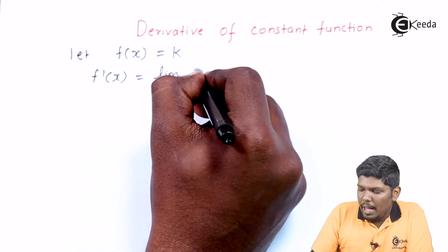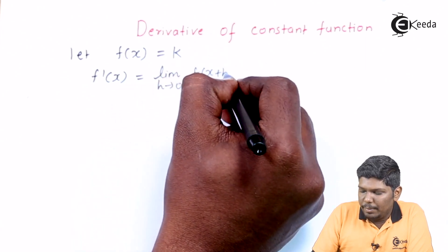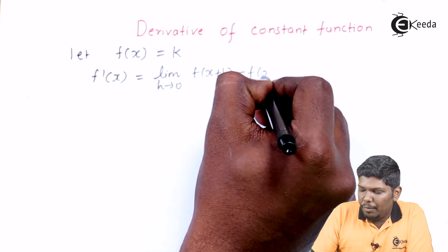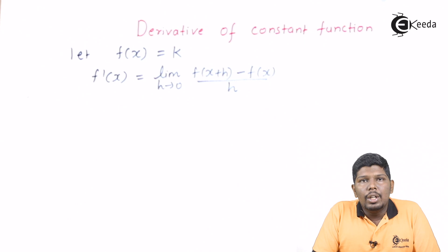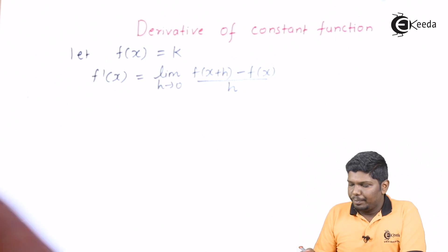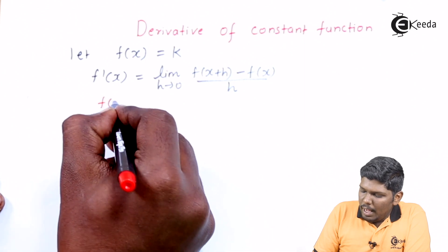So we have taken a function that is constant. Now in this formula we have two terms: f of x plus h and f of x. Now we are going to find the second term, that is f of x plus h. So let us start.